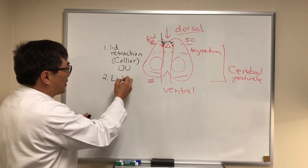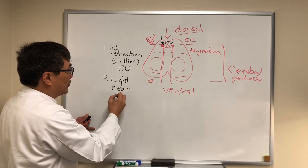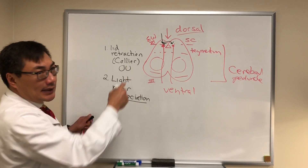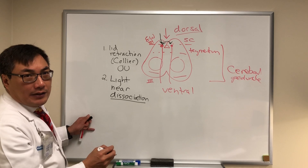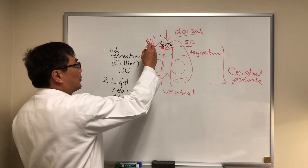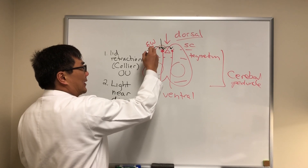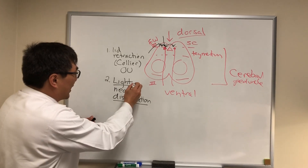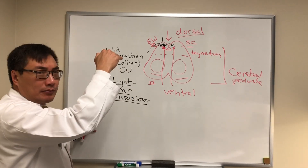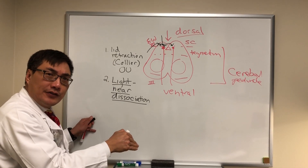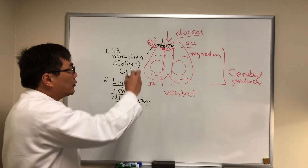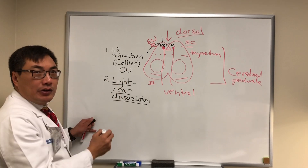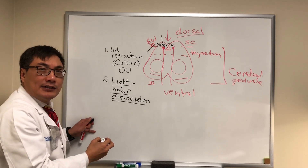We might also see a problem with the pupil called light-near dissociation. Basically the light and the near pathway are dissociated at the level of the pre-tectal nuclei input to the Edinger-Westphal nucleus. We can have an interruption in that pre-tectal signal — in this case the light pathway coming from the optic tract — that will disrupt the light pathway but spare the near pathway, because the near pathway is more rostral and can talk directly to the third nerve nucleus and the Edinger-Westphal from above.